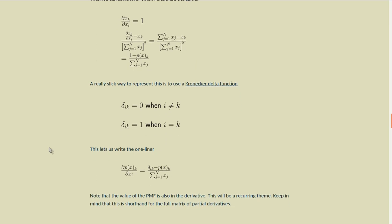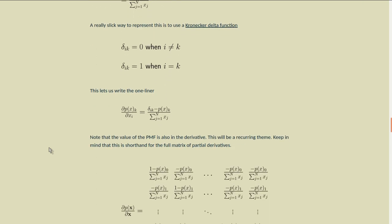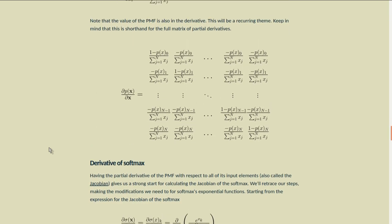A really slick way to represent this is to use the Kronecker delta function, which just happens to be one when i equals k and zero whenever i is not equal to k. So in this case, we can put it all, it captures both cases in a one-liner. It's just a shorthand way to write the same thing if you like that. The partial derivative of p of x sub k with respect to x sub i is the Kronecker delta minus p of x sub k all over the sum of our x's. So note that there's also the value of the PMF is also in the derivative. This is a recurring theme. Keep in mind that this is shorthand for the full matrix of partial derivatives.